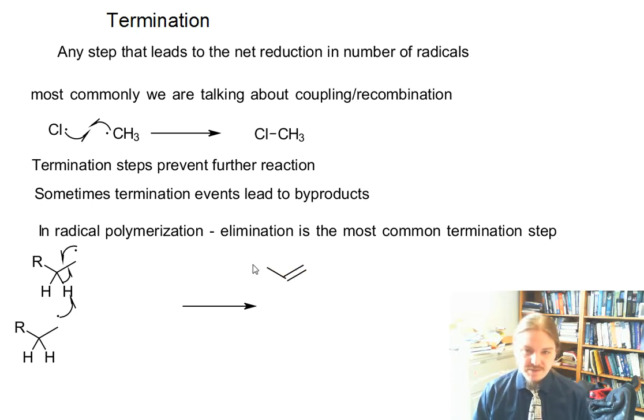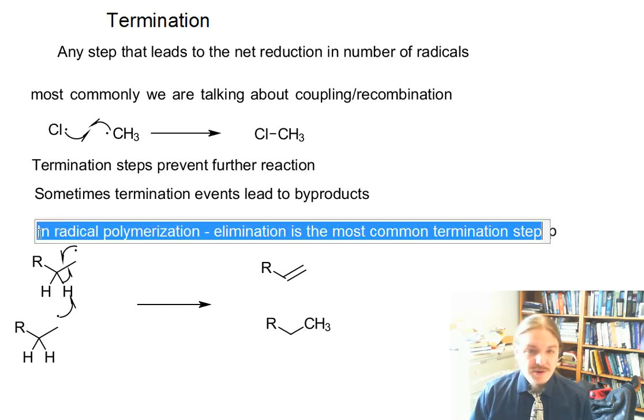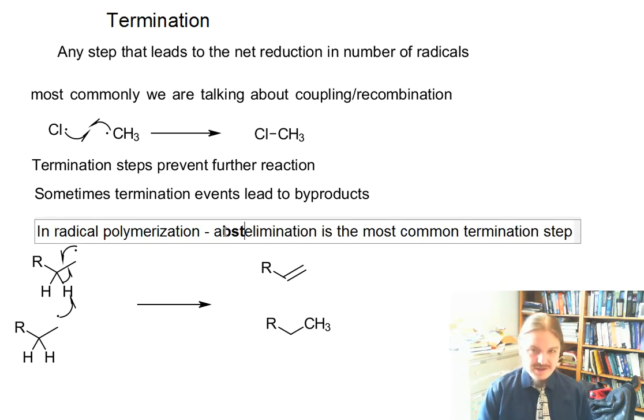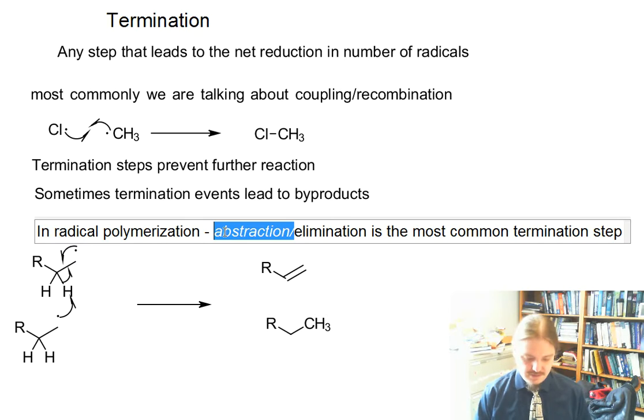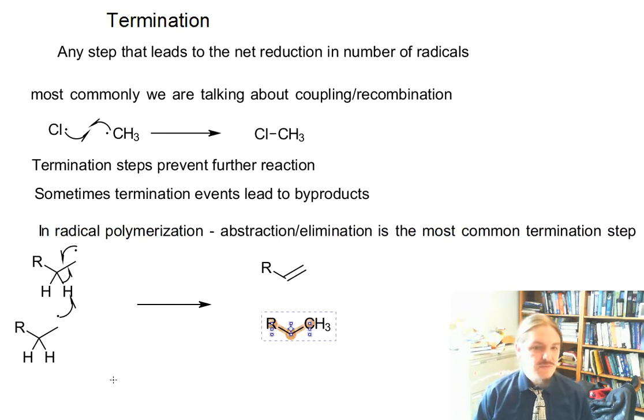The chain on the top here becomes an alkene at the end, the elimination outcome, and the chain on the bottom ends up with a methyl group there at the end instead of the radical. So actually I want to amend my statement here - these are both abstraction slash elimination events. It's abstraction on one chain and elimination on the other.